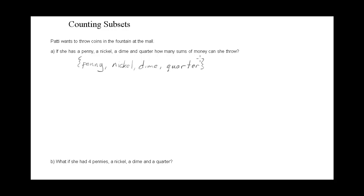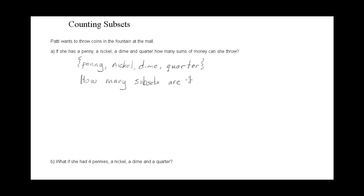Now we want to know how many different sums she can throw. Any subset of these four elements she could throw — she could throw just a penny, just a nickel, just a dime, just a quarter, or she could throw the penny and the nickel, the penny and the dime, etc. So there are a lot of combinations. Really what we want to know is how many subsets are there of this original set.